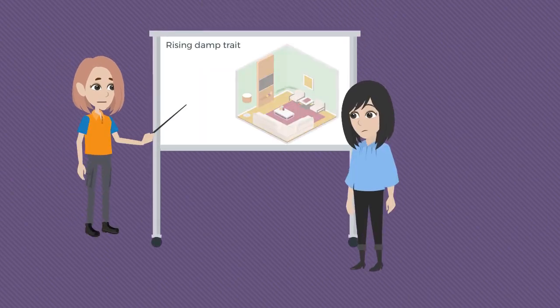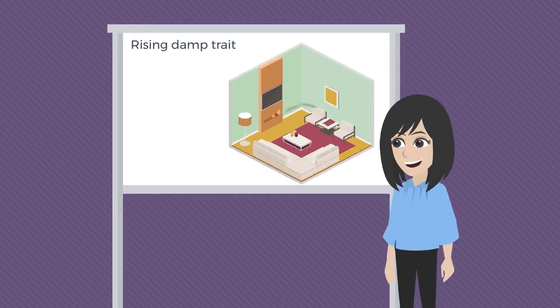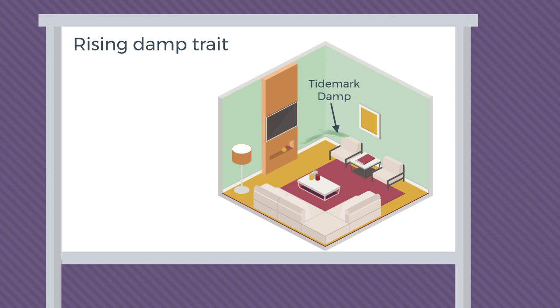Tide marked damp stains are a common sign of rising damp. These will only appear on ground floor walls and usually rise to a height of around one meter, although in a heated property the damp may only extend just over the skirting board as the warmth of the room draws the moisture out.